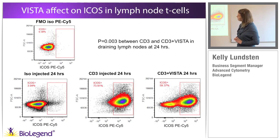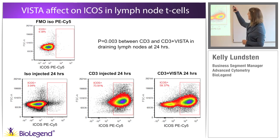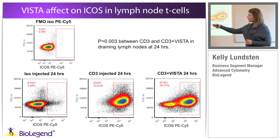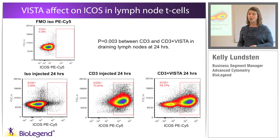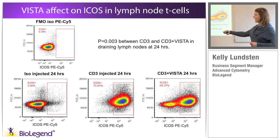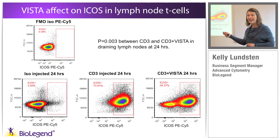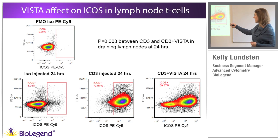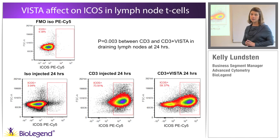VISTA absolutely had a statistical effect on ICOS in the lymph nodes. Looking at FMO for lymph node cells at 24 hours with CD3 injection, ICOS positivity was 74% — extremely strong. VISTA treatment produced a very significant ~20% reduction in ICOS positivity. There was clearly a population being affected by VISTA treatment. But that strong ICOS expression also means I'm inadvertently populating a ton of PE-Cy5 background on every single T cell, which is not desirable.